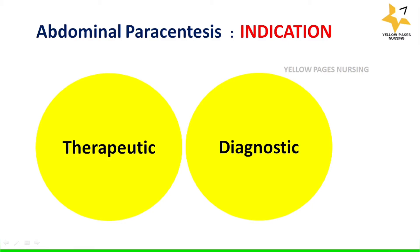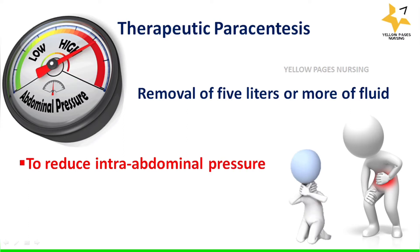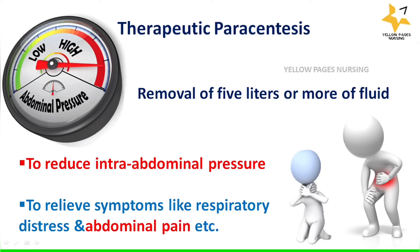Therapeutic paracentesis involves removal of five liters or even more. The main purposes may be to reduce intra-abdominal pressure and to relieve symptoms like respiratory distress and abdominal pain.